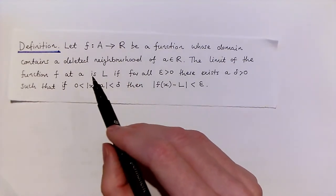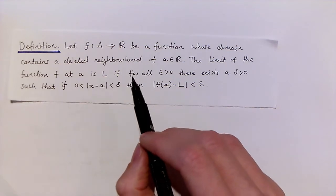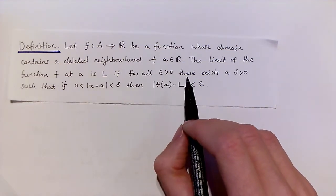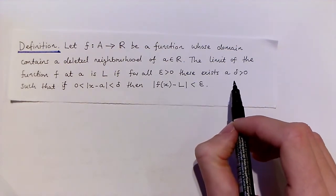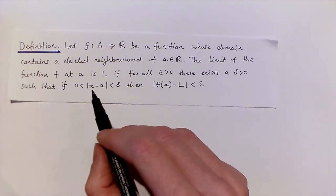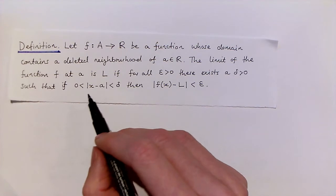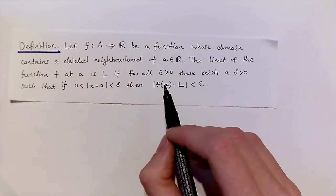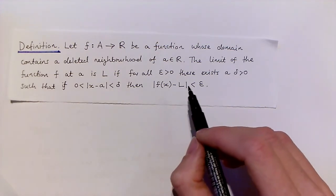The limit of the function f at a is l if, for all epsilon greater than zero, there exists a delta greater than zero, such that if the modulus of x minus a is between zero and delta, then the modulus of f(x) minus l is less than epsilon.